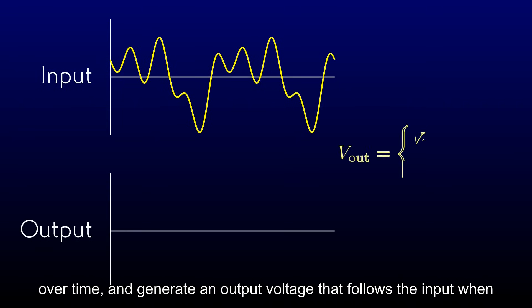The idea here is that we will take some voltage varying arbitrarily over time, and generate an output voltage that follows the input when it's positive, but gets clamped to ground when it's negative.